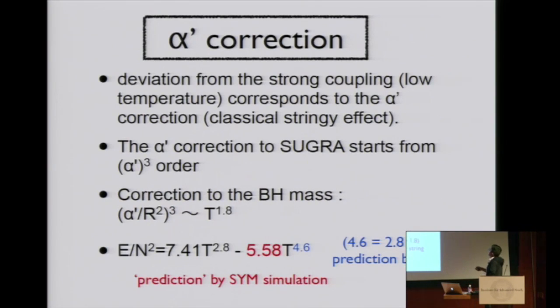Deviation from the strong coupling limit must be α' correction. In type IIA string, the α' correction should start with α'^3. α' and α'^2 should be absent. α' is dimension-full, so natural dimensionless expansion parameter is α' divided by curvature square.